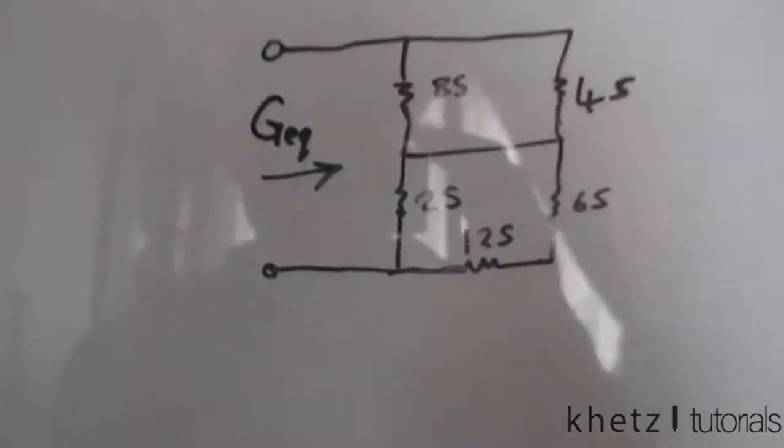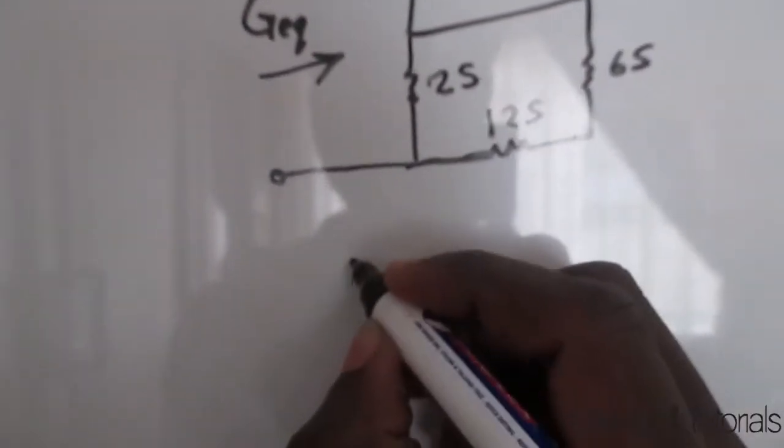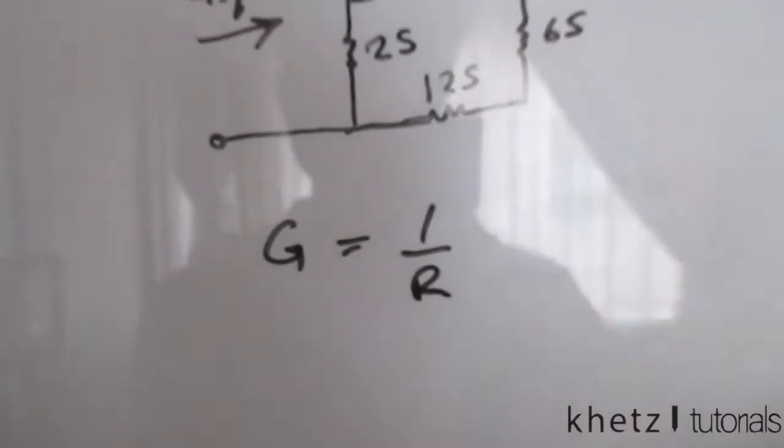Now let's have a quick recap from the textbook. G, which is conductance, is the reciprocal of resistance.